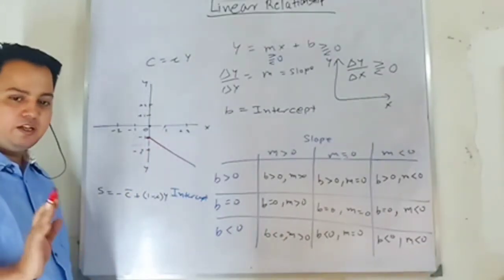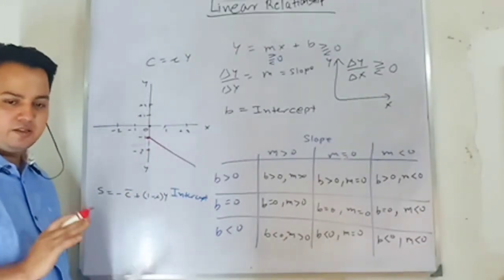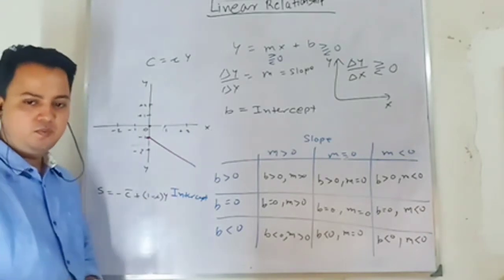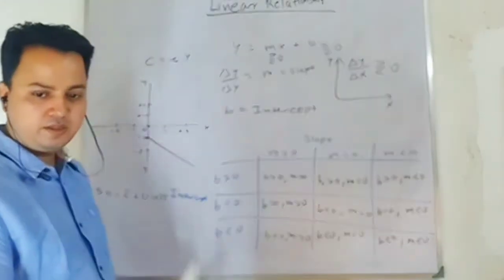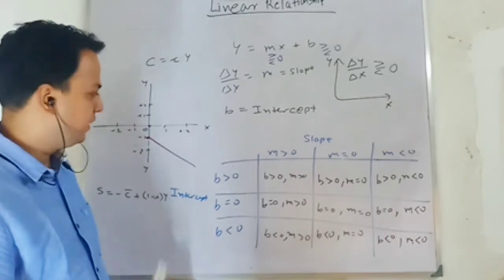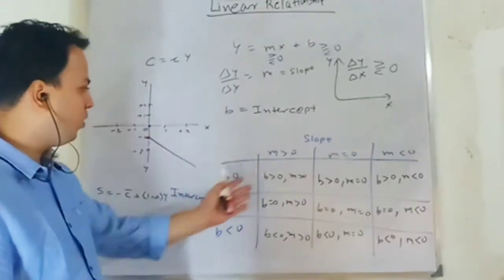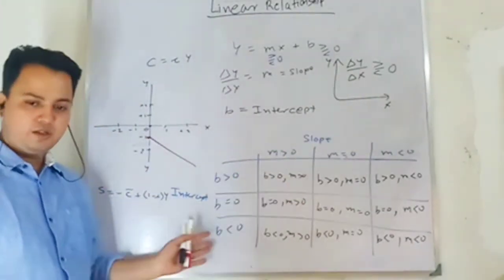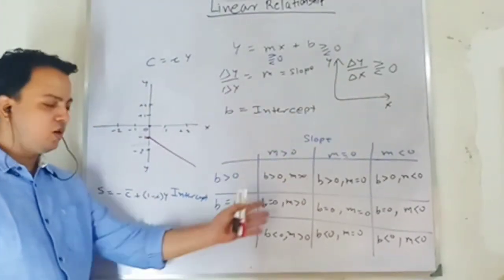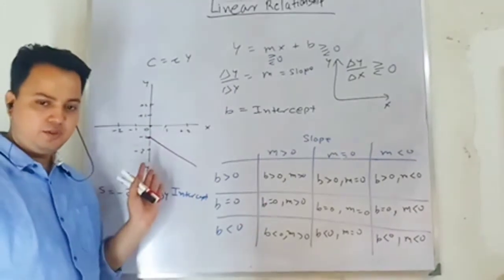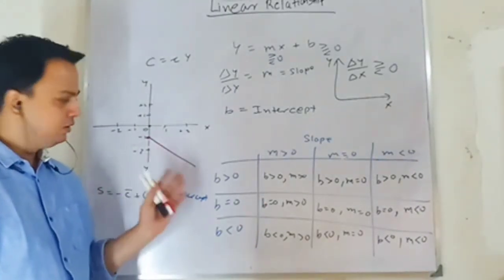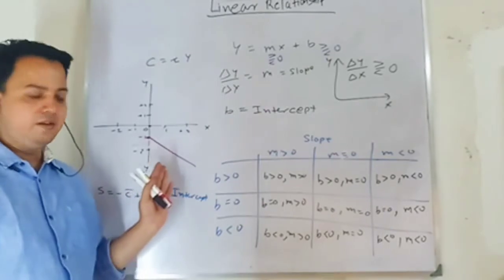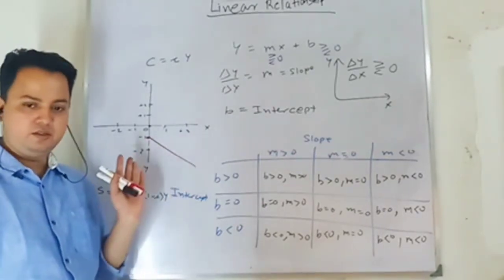We have now drawn all nine possibilities for linear relationships. Some of these we use in economics, and some we don't. Drawing a graph from a linear relationship is very useful — these are all the combinations of positive, negative, and zero slope and intercept.